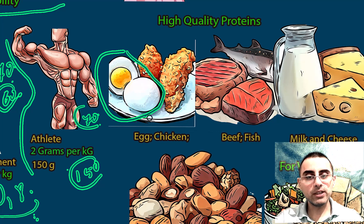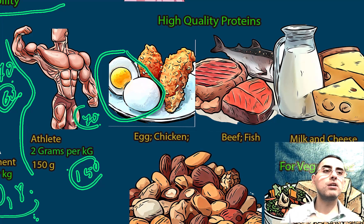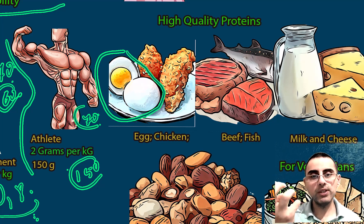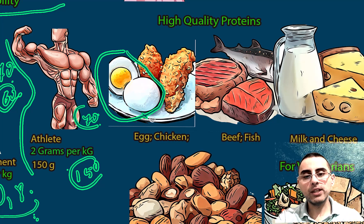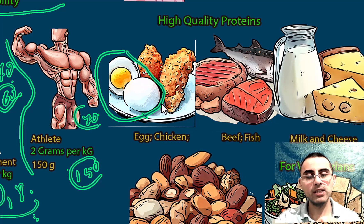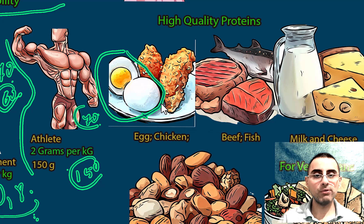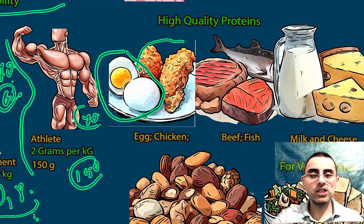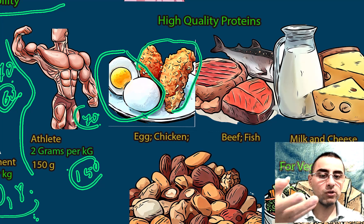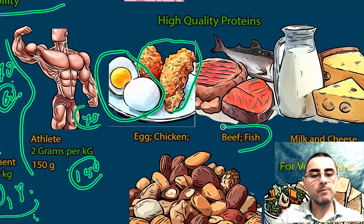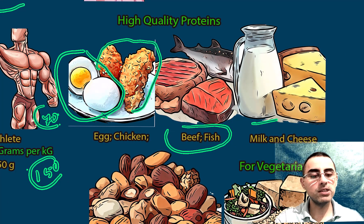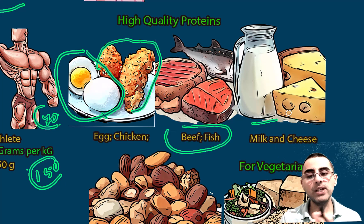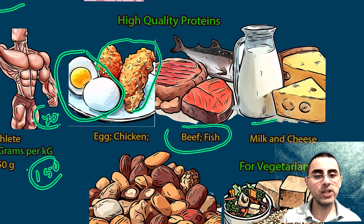The classic example of a high-quality protein is egg. Egg contains all essential amino acids and is digested easily, with the majority of its protein absorbed very efficiently. Chicken — especially chicken breast — is also a great source containing all essential amino acids. Fish, beef, and milk products like milk, cheese, and especially Greek yogurt also contain all essential amino acids and are high-quality proteins.